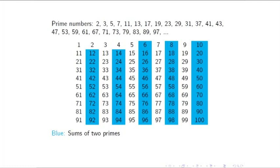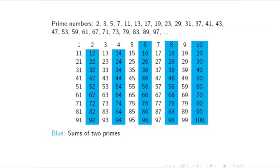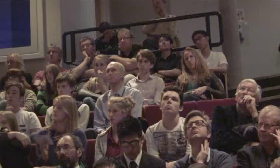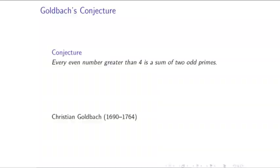If I add two odd primes, I get an even number — so straight away I can't end up in the odd columns; those are empty forever. That's a proof that those columns really are empty. My other observation is that all the even numbers between 6 and 100 can be written as the sum of two odd primes — that's quite surprising. The conjecture is that every even number from six onwards can be written as the sum of two odd primes.